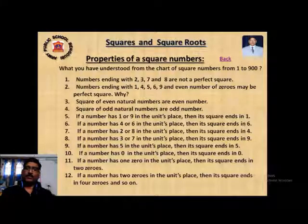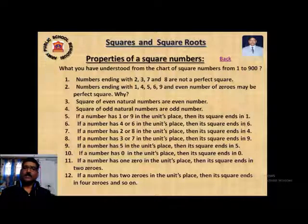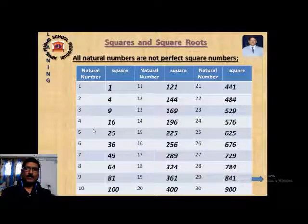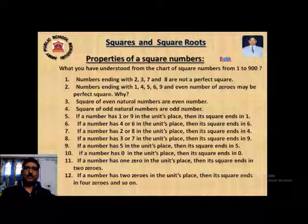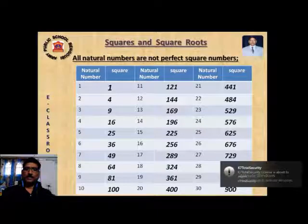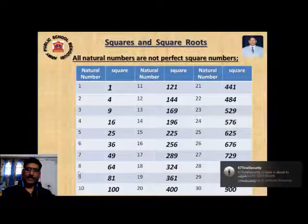The square of an even natural number is always even, and the square of an odd natural number is always odd. From the chart we also see the unit digit pattern: numbers ending in 1 or 9 will have a square ending in 1; we can similarly identify unit digit relationships for other endings.